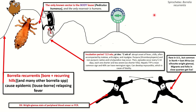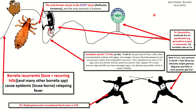The diagnosis is made via right Giemsa stain, a peripheral blood smear, or PCR. The treatment is doxycycline — the same as for the treatment of Lyme disease.